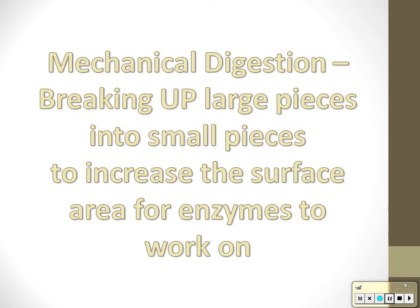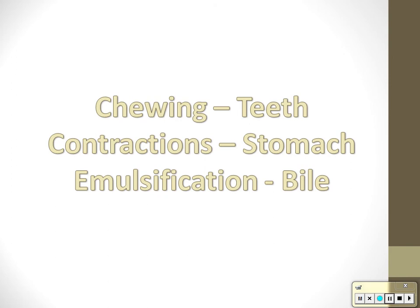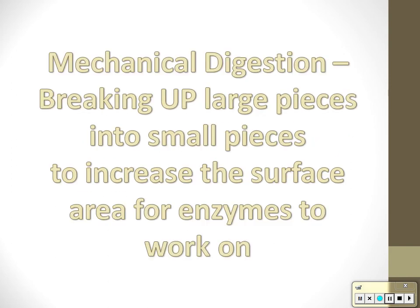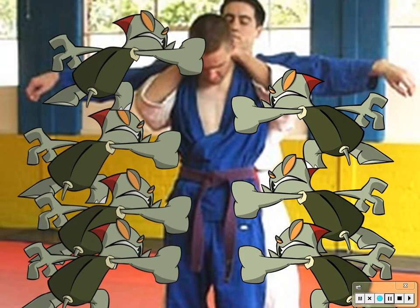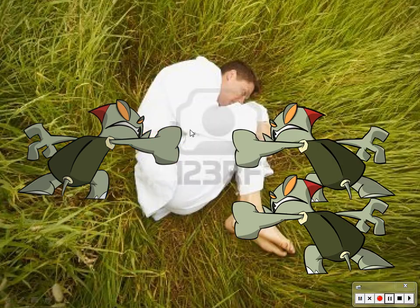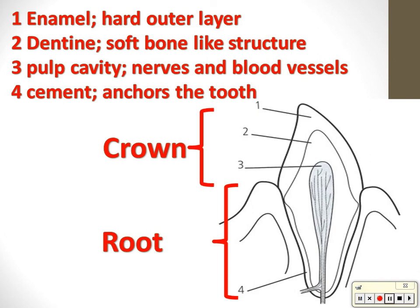Three ways we do mechanical digestion: chewing with the teeth, contractions in the stomach, and emulsification by bile. We want to increase surface area so enzymes can attack or catalyze a reaction on as much of the food as possible. Think of the food as a blue ninja rolled up in a ball — if you open him up, more enzymes can work on him. That's what chewing does.